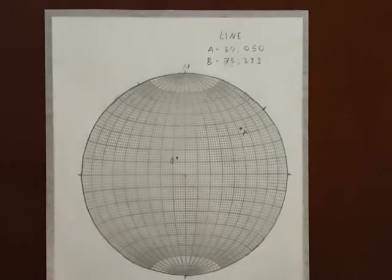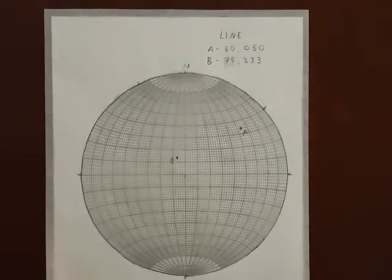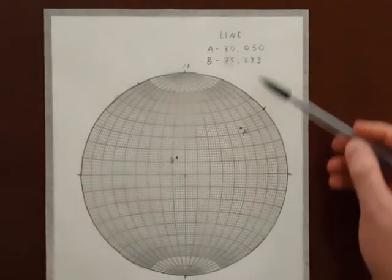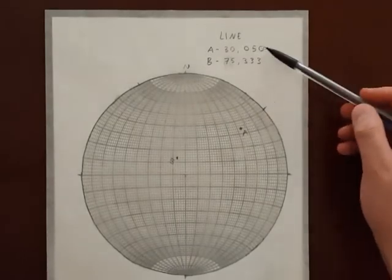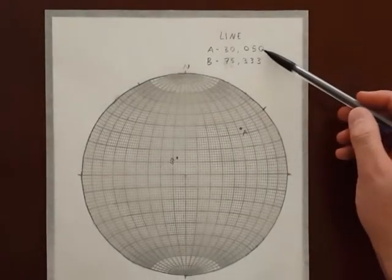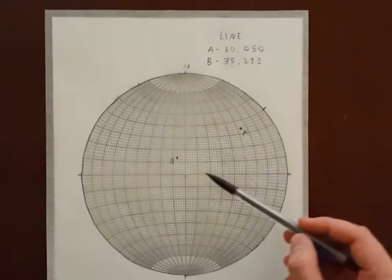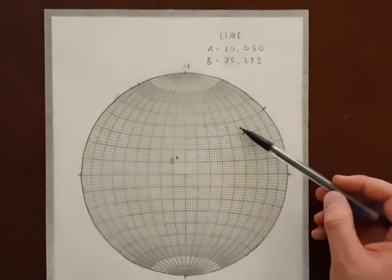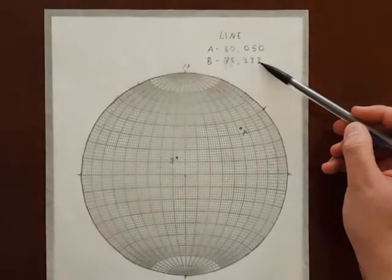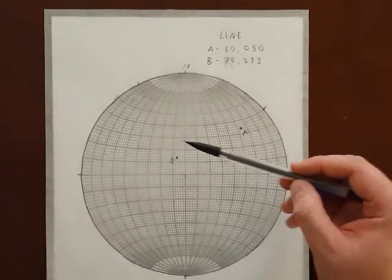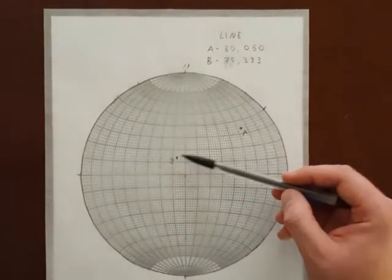Let's go ahead and check ourselves for our lines. First, we want to make sure that the line is in the same quadrant that it trends. So, A trends 050, or in the northeast quadrant, and A is certainly in the northeast quadrant, so that's check for A. 333 is in the northwest quadrant, while B certainly lands in the northwest quadrant, so there's a check.